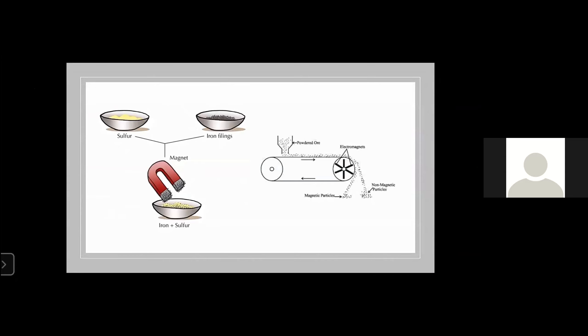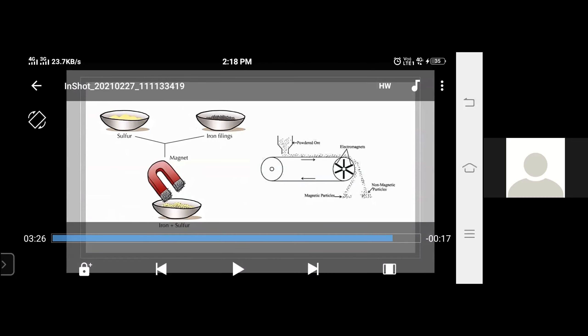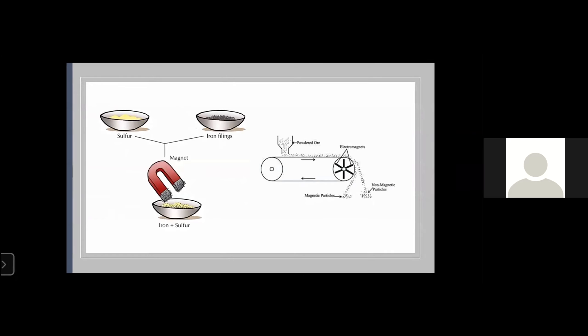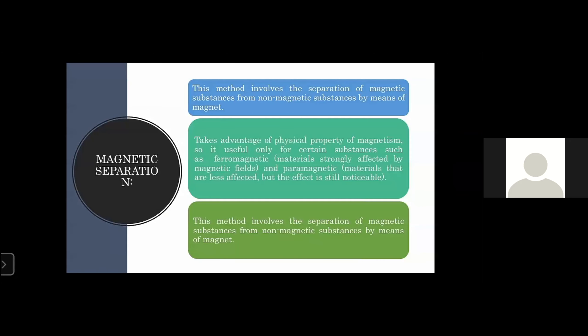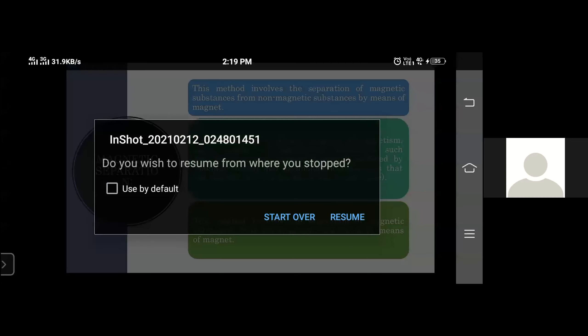Now the fourth process. By looking at the picture itself, you understand what it is — it is magnetic separation. We separate magnetic substances from a mixture by using a simple magnet. This method involves the separation of magnetic substances from non-magnetic substances by means of a magnet. So these are the four methods of separation of mixture, and now the fifth method will be dealt by Mohit.